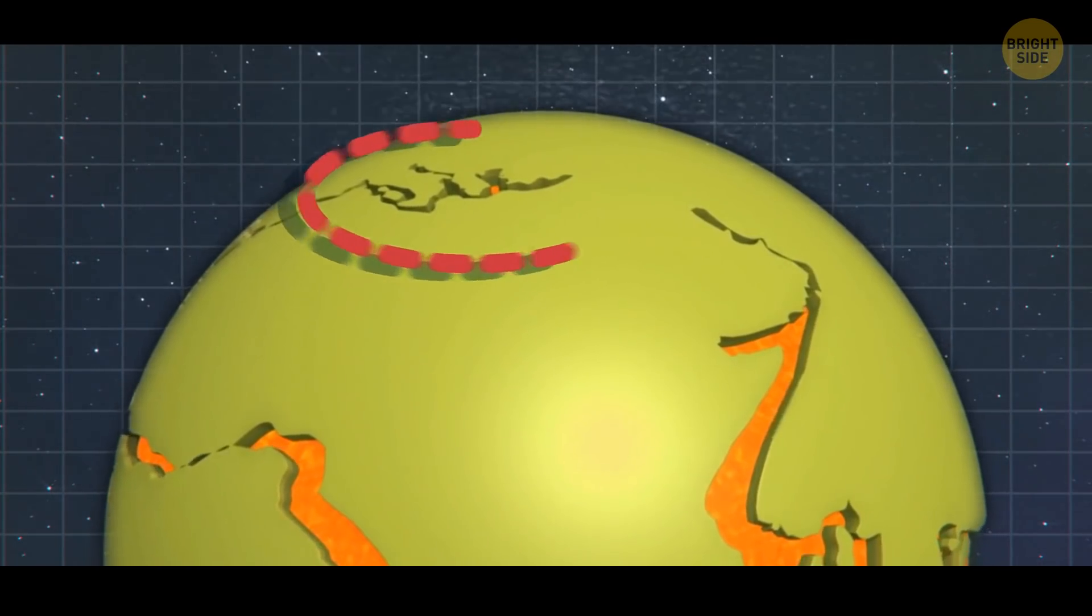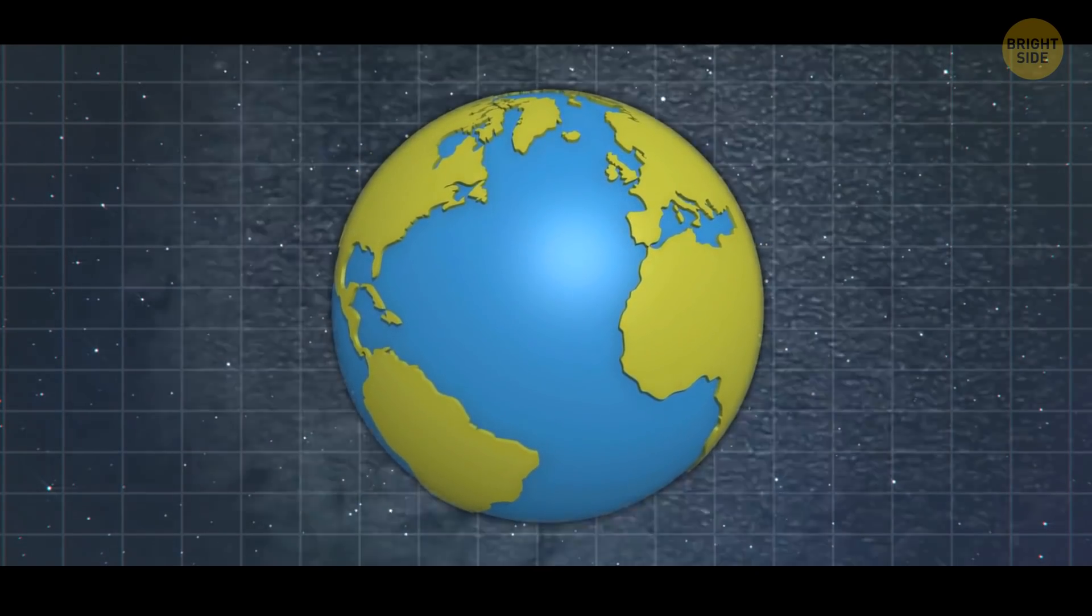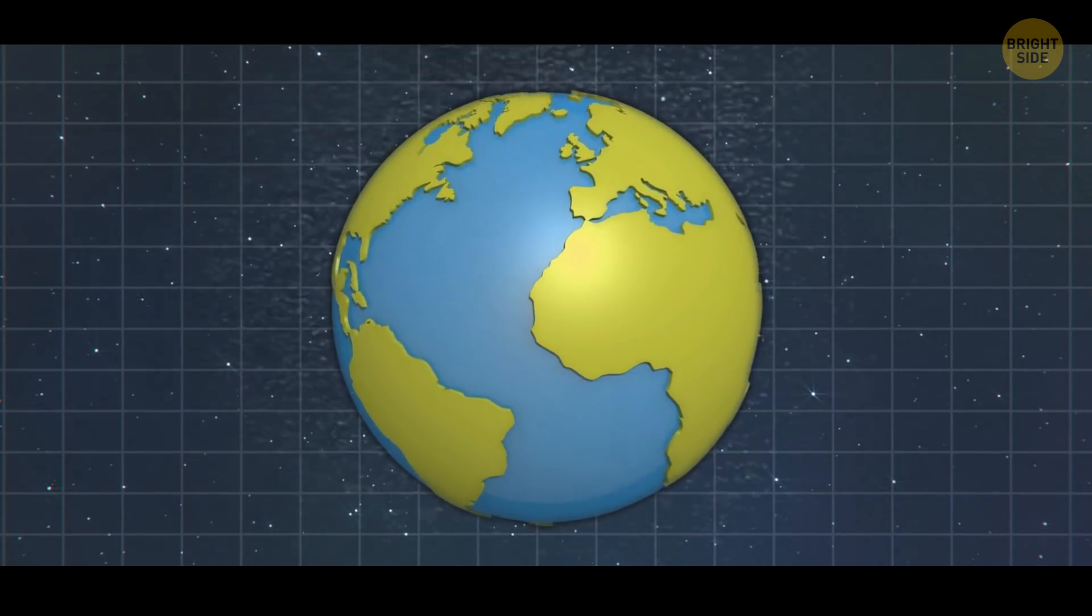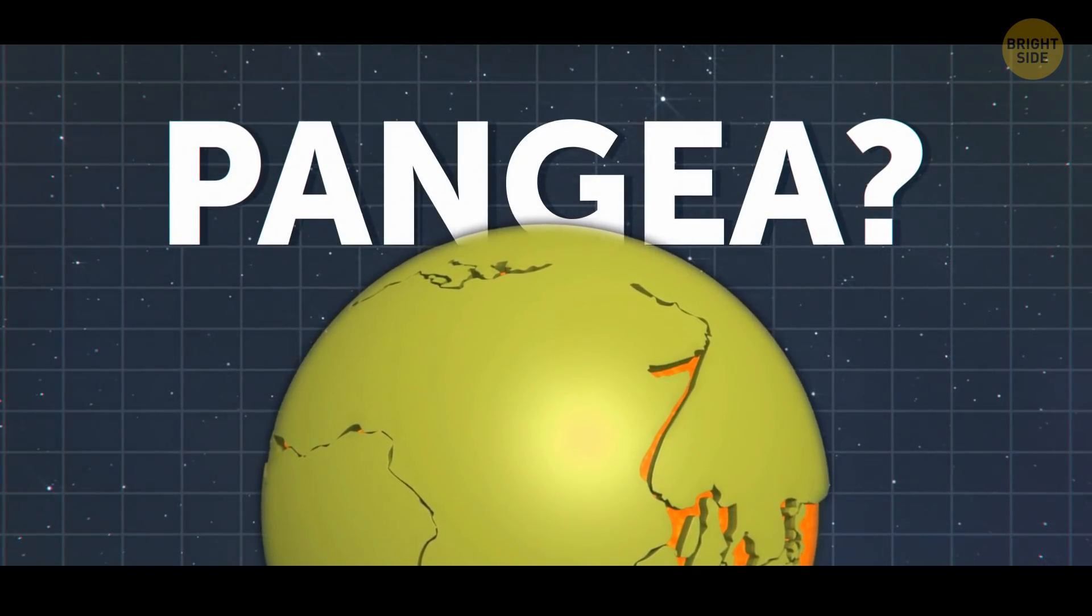So, if you took all of Earth's landmasses—continents, microcontinents, islands, and archipelagos—and squished them together, would you get the original blob of land known as Pangaea? Nope.